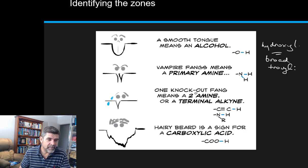The amine group are the little vampire fangs. So if you look at two sharp peaks as opposed to the broad peak or trough that we saw for the hydroxyl group, that's telling you about an amine. A knockout fang is the secondary amine. And secondary amines occur exactly the same as secondary alcohols. That means that they're attached to a carbon that is attached to two other carbons. There's also a terminal alkyne, which is another way of getting this little knockout thing. And then there's the hairy beard, which is a sign for the carboxylic acid.